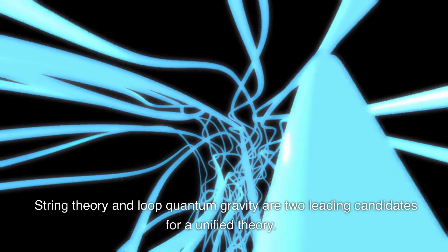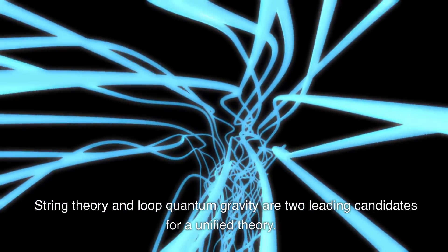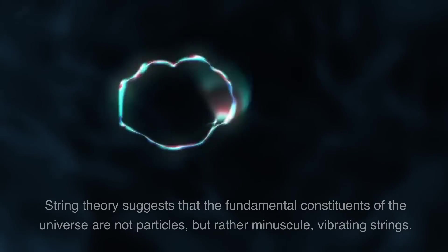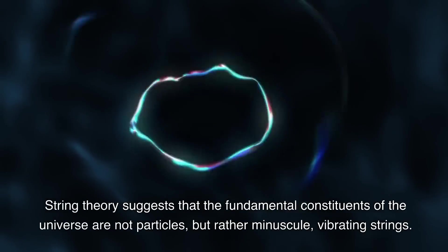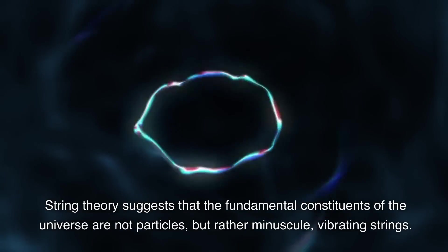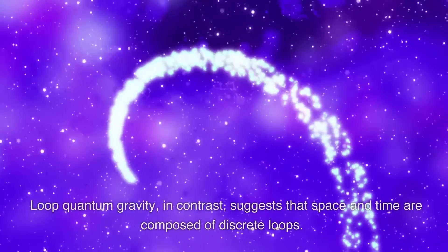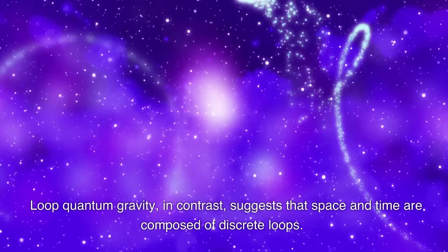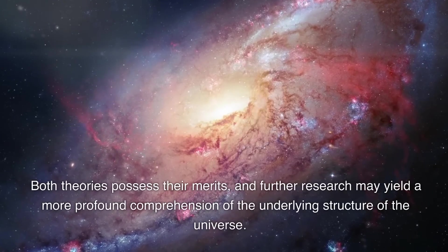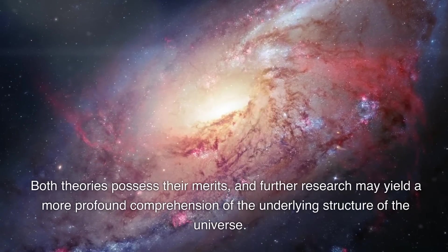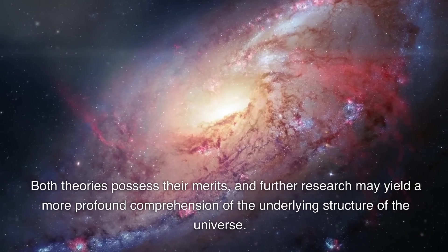String theory and loop quantum gravity are two leading candidates for a unified theory. String theory suggests that the fundamental constituents of the universe are not particles, but rather minuscule vibrating strings. Loop quantum gravity, in contrast, suggests that space and time are composed of discrete loops. Both theories possess their merits, and further research may yield a more profound comprehension of the underlying structure of the universe.